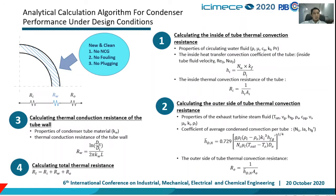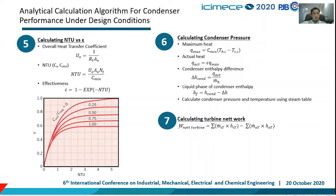This is the analytical calculation algorithm for condenser performance under design condition — new and clean, with no non-condensable gas, no fouling, and no plugging. We calculate the inside-tube thermal convection resistance, outside-tube thermal convection resistance, thermal conduction resistance of the tube wall, and total thermal resistance. Then we calculate NTU, effectiveness, condenser pressure, and turbine net work.